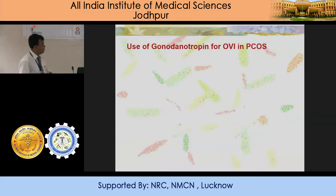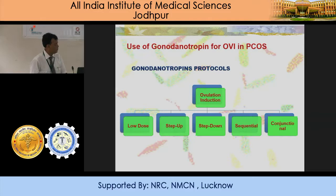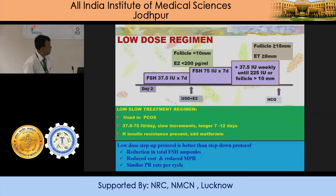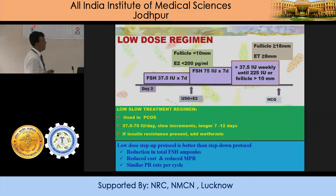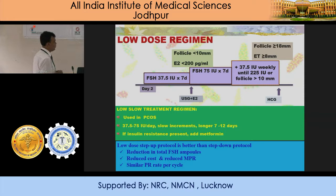Use of ovulation induction with HMG gonadotropins — there are various regimens: low dose, low dose step-up, step-down, sequential, and concomitant. This is used only in resistant cases and when doing IVF cycles. The low dose step-up regimen is simple: you start low, and whenever a dominant follicle appears, you trigger. This is used in PCOS. If the patient is insulin resistant and you are giving metformin, adding metformin with gonadotropins is a very good option in PCOS.